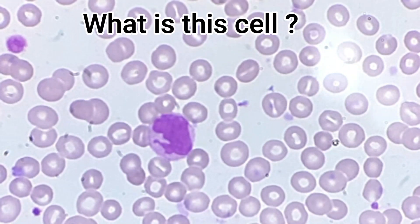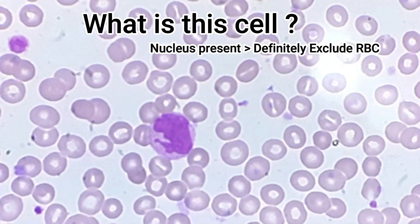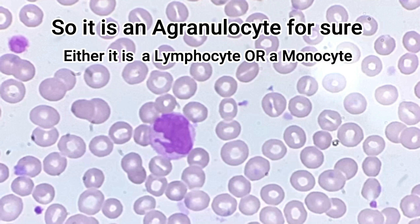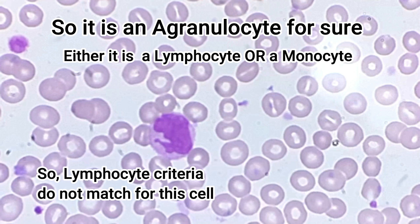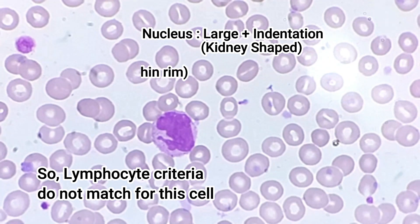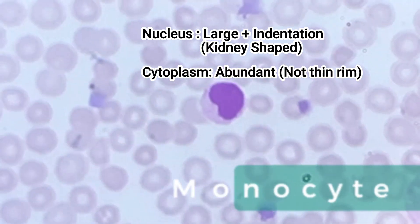Let's focus on this one. It has a nucleus, so it is definitely not an RBC. The nucleus has no lobes and the cytoplasm is not very granular — relatively clear — so it is not among granulocytes; it is not a neutrophil, eosinophil, or basophil. Limiting thought to agranulocytes: is it a lymphocyte or a monocyte? Previously we said lymphocyte nucleus is round with no indentation and lymphocyte cytoplasm is very scant — only a thin rim of cytoplasm. Does this fit? No — it has a big nucleus with a slight indentation, sometimes referred to as a kidney-shaped nucleus, and more importantly it has abundant cytoplasm. This is none other than a monocyte.